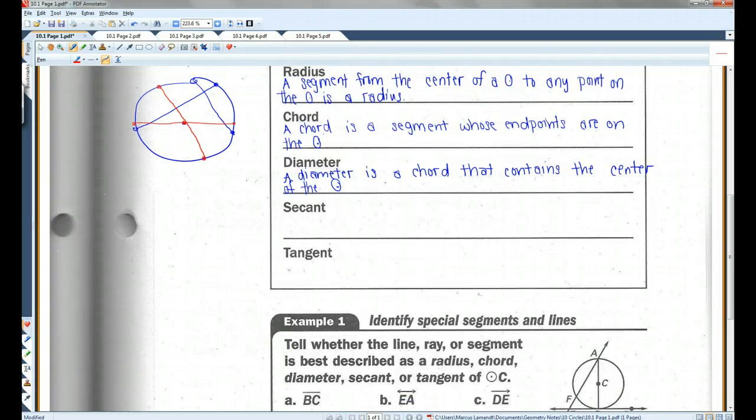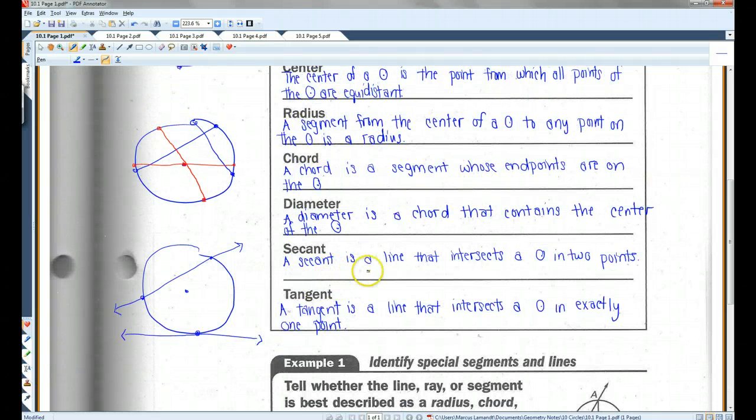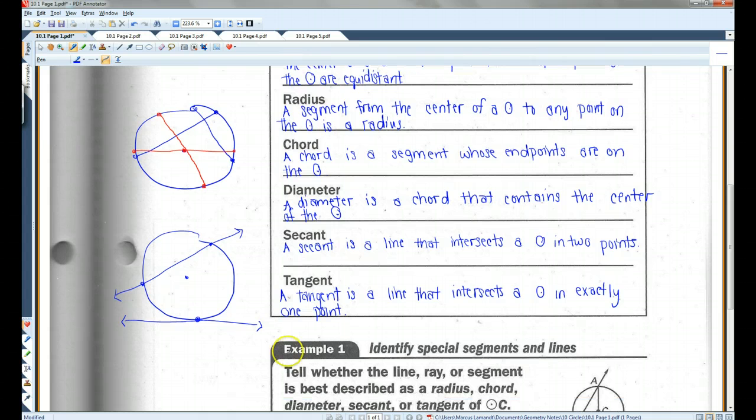Secants and tangents. A secant is a line that intersects a circle in two points. So this line here would be a secant line because it intersects the circle twice. A tangent is a line that intersects a circle in exactly one point. This would be a tangent line because it intersects once.